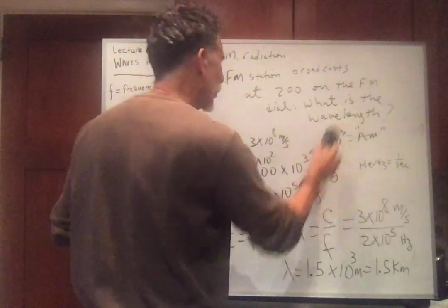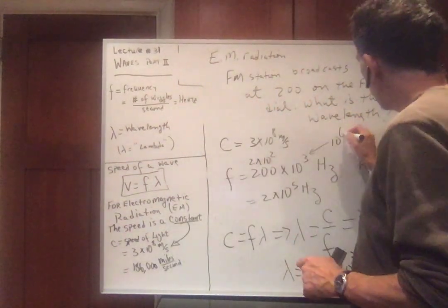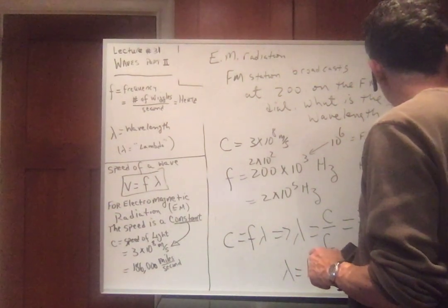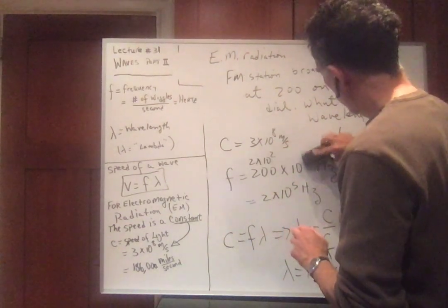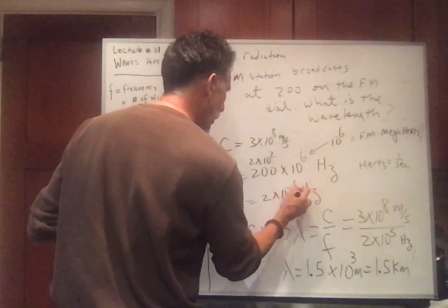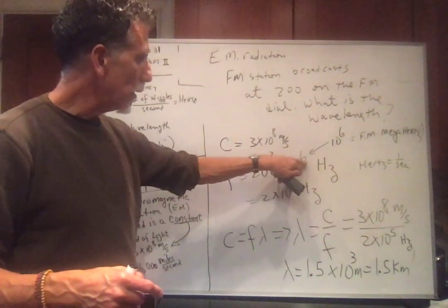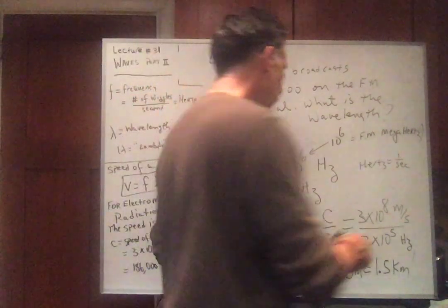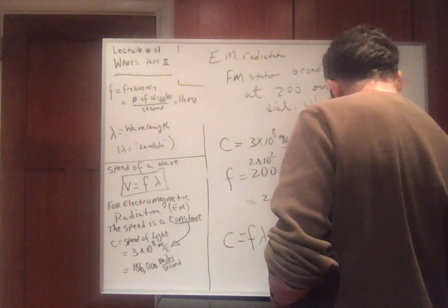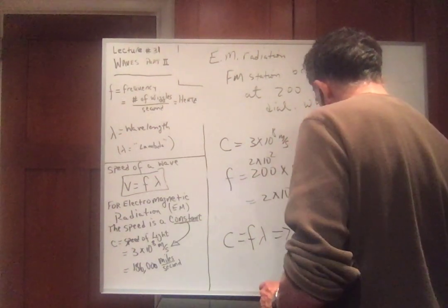Now the frequency is what? 200 on the FM. So FM is megahertz. So this becomes 2 times 10 to the 8th. 2 times 10 to the 2nd times mega is 10 to the 6th. 10 to the 2nd, 10 to the 6th is 10 to the 8th. So now we have 3 times 10 to the 8th divided by 2 times 10 to the 8th. And what do we get? We just get 1.5 meters.